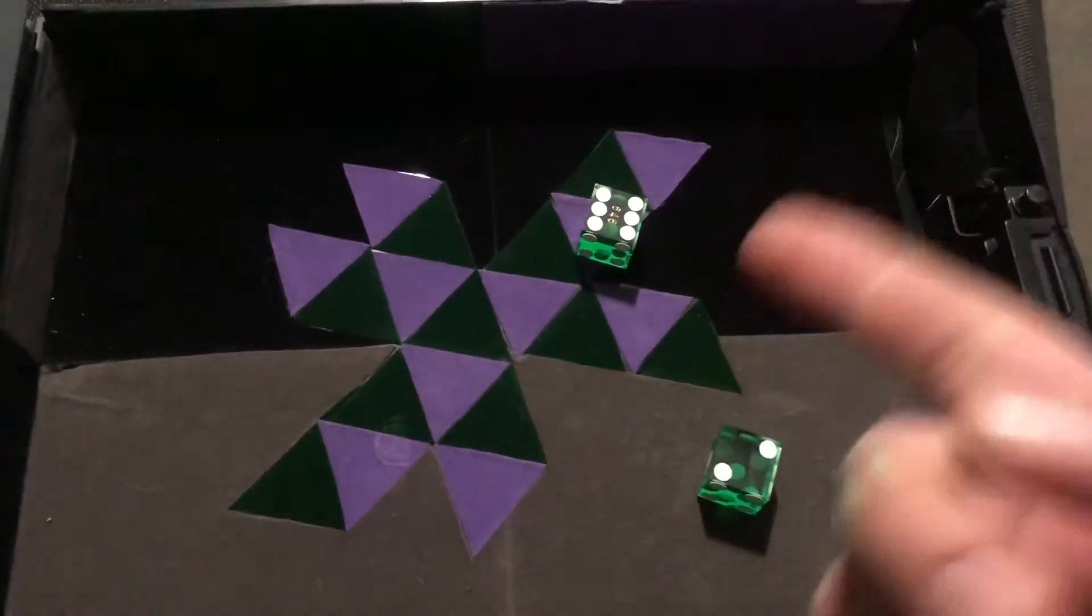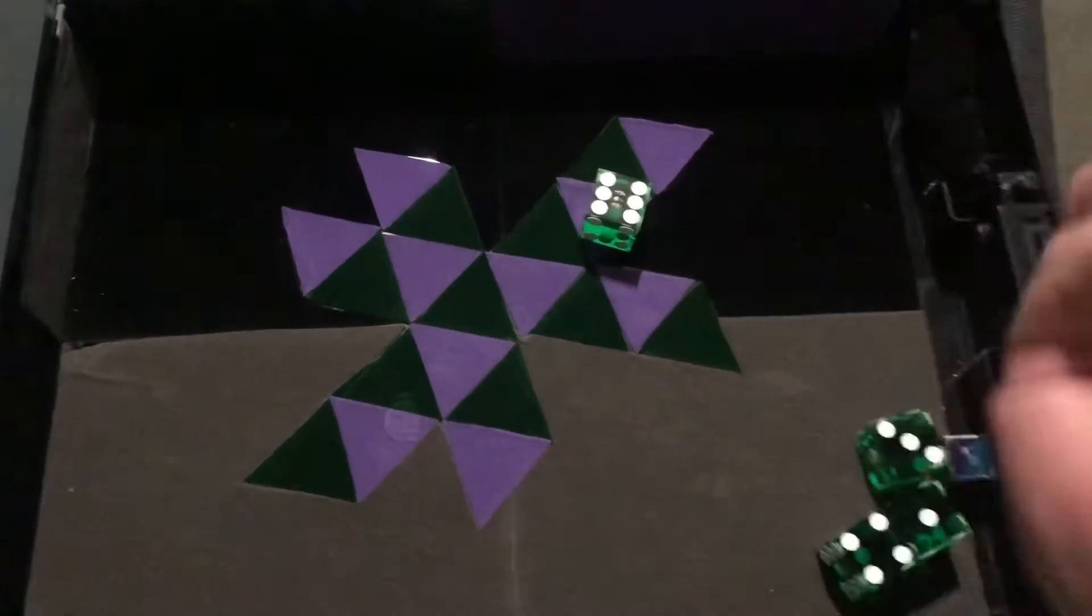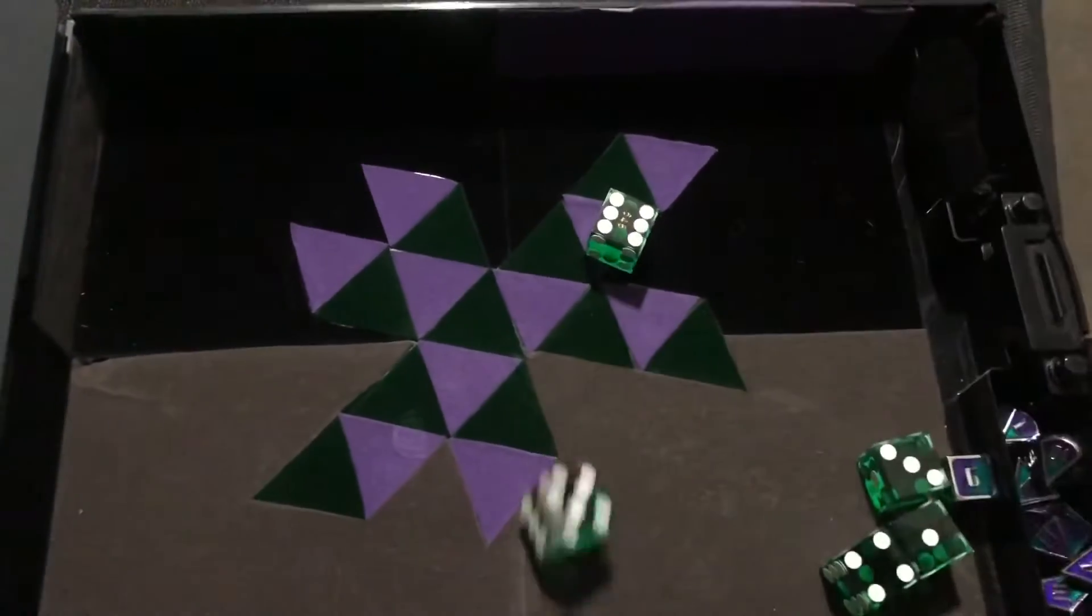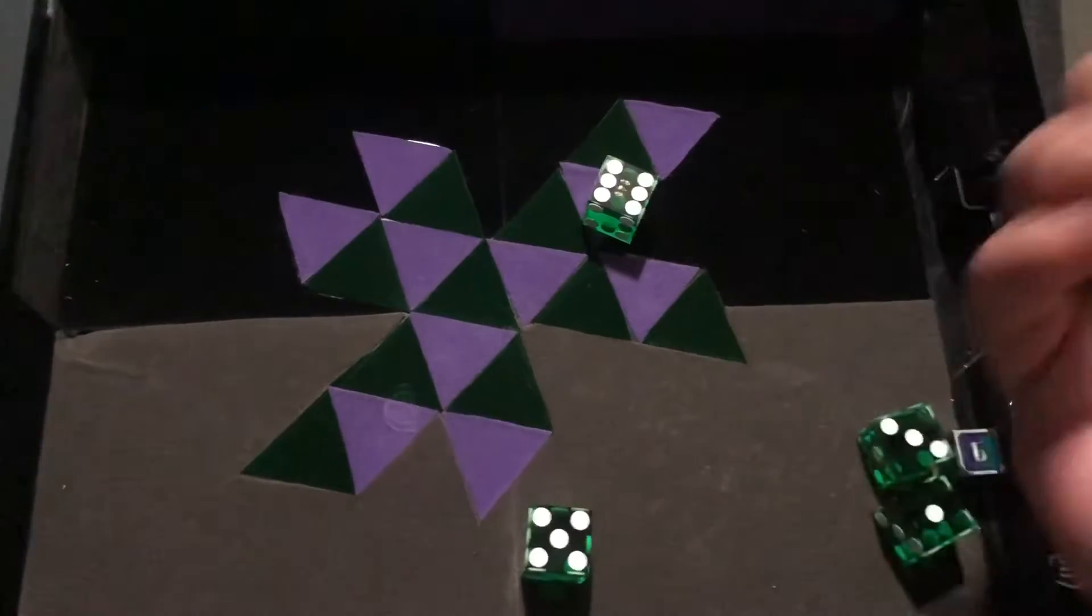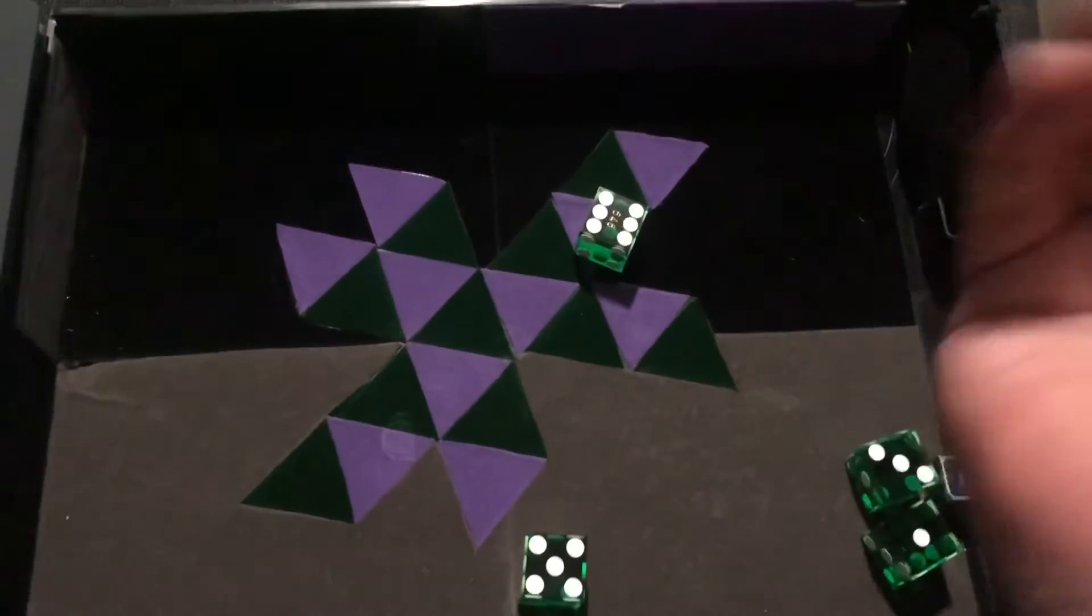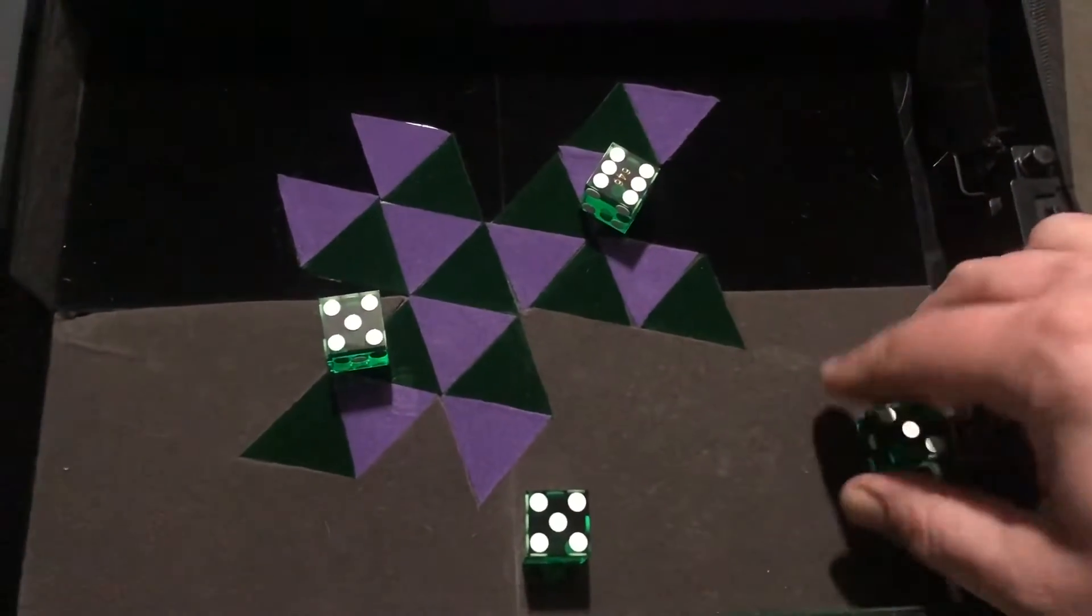You see, you got to roll the dice. You can't just drop them. See what I'm talking about? Ability score roll.